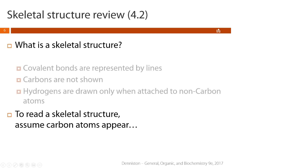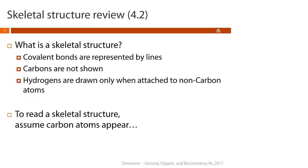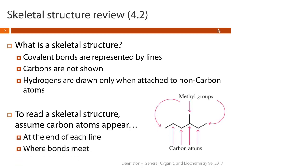In this class we're going to draw almost everything as a skeletal structure — unless told otherwise, give your answer as a skeletal structure. A skeletal structure is where covalent bonds are represented by lines. We don't show carbons, and hydrogens are only drawn when attached to a non-carbon atom. To read a skeletal structure, assume carbon atoms appear at the end of each line and where bonds meet.